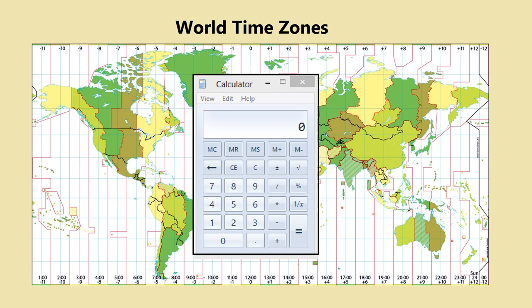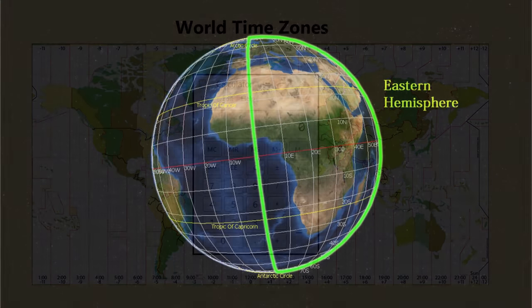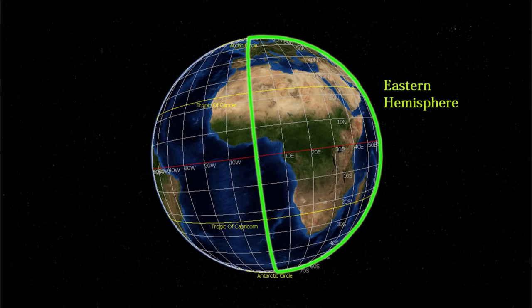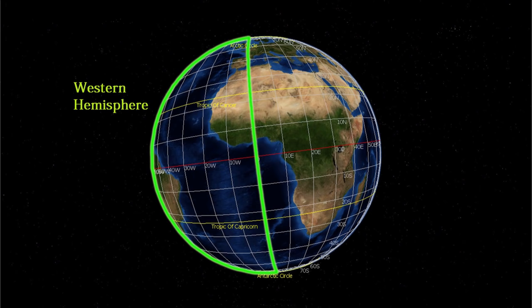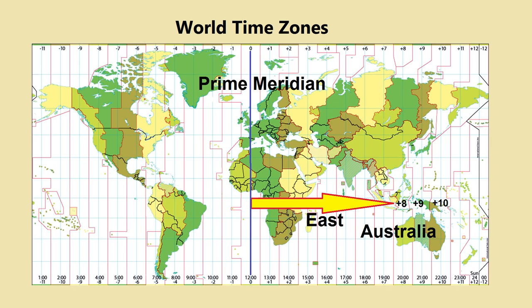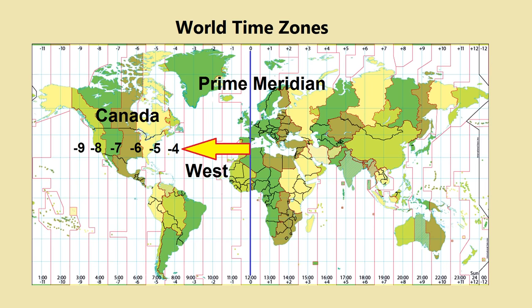Now I will show you how to calculate time zones. First, determine whether the time zone is in the eastern or western hemisphere. If a time zone is east of the prime meridian, such as Australia, it will be at an earlier time than Greenwich Mean Time, or GMT. If it is west of the prime meridian, such as Canada, it will be a later time.